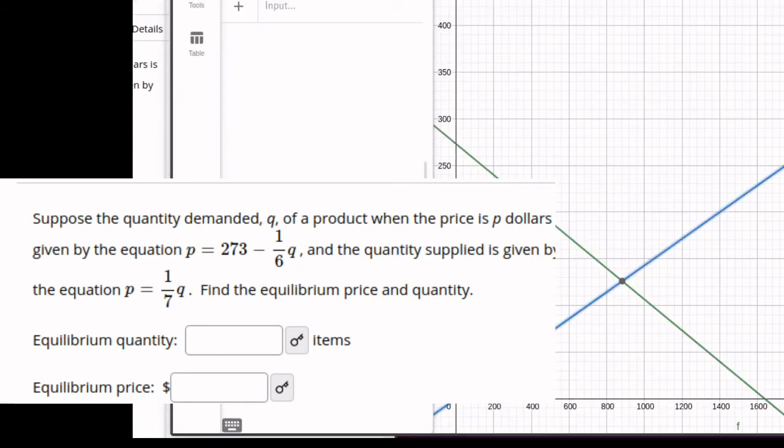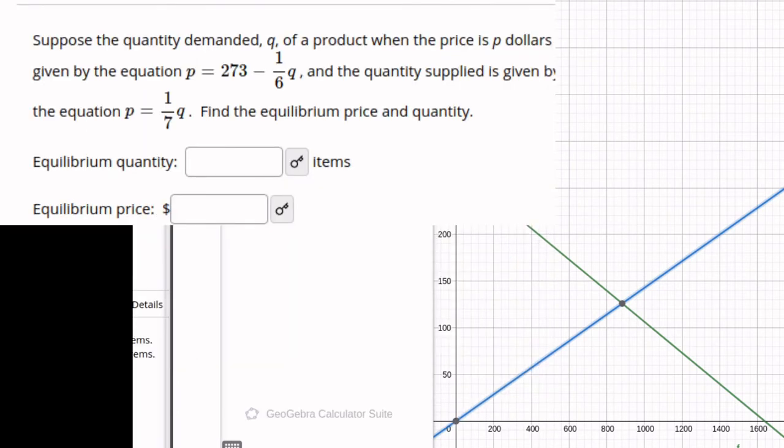So there you have it. Let me move things out of the way a little bit. What we're looking for then is this point right here. Graphically we can see that point is around maybe 900 or something like that for the q value for the quantity, and around 100 and maybe 25 for the price value.